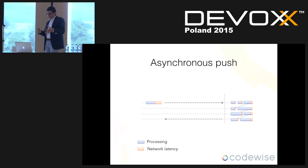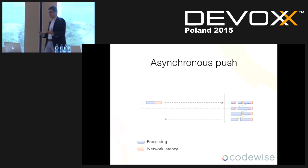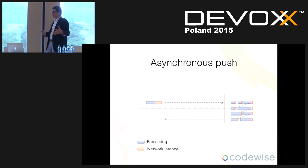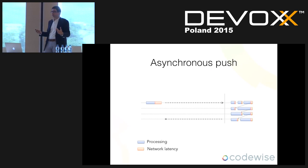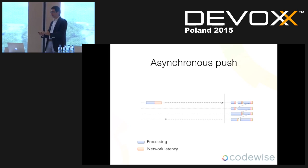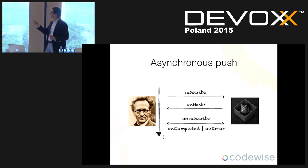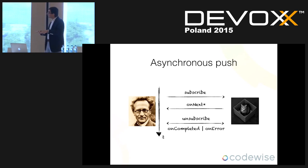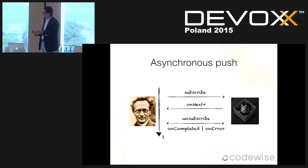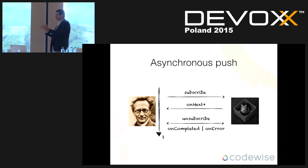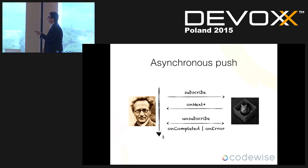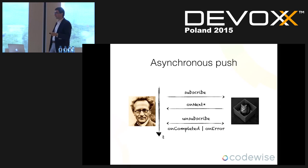Netflix started using RxJava and porting it to Java. The basic class of this framework is an Observable. When we want to create a stream we create Observables — classes that emit events we can observe. The contract works like this: if we have an Observable defining some computation and we want to start receiving data, we call subscribe. When you call subscribe, the actual computation starts.